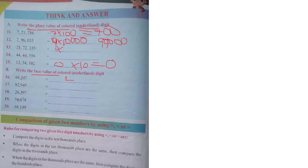Your job now is to find the place value of the underlined digits. For example: 7 at hundreds position — 7 × 100 = 700. 9 at ten-thousands position — 9 × 10,000 = 90,000. 1 at lakhs position — 1 × 1,00,000. 4 at thousands position — 4 × 1,000. Face value answers are just the numbers themselves: 0, 9. In the next session we will see comparison of two numbers using less than, greater than, and equal symbols.